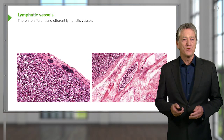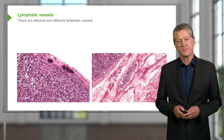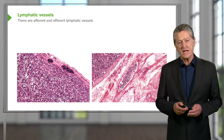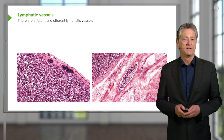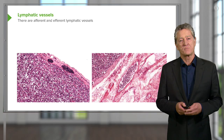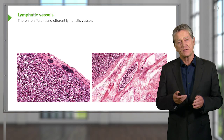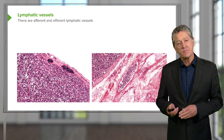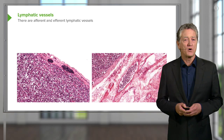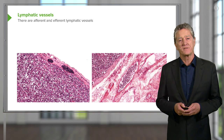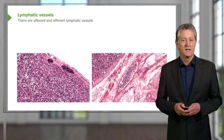When fluid passes out of the blood vessels in capillaries into the interstitium, generally it's returned back into the capillary ends or the venule ends of the capillaries. So there's a balance between the amount of fluid in plasma and the amount of fluid in the interstitium, and that's controlled mainly by the presence of the plasma protein albumin in the blood.